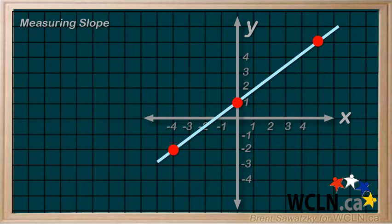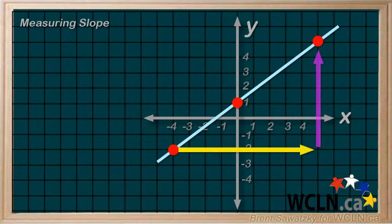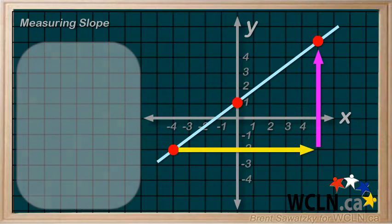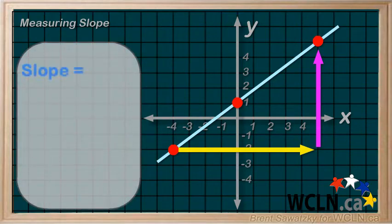Now once we have our two points, we can draw in our triangle. That is, our run, and then our rise. And now it's time to pull out the definition of our slope. Again, slope equals rise over run.